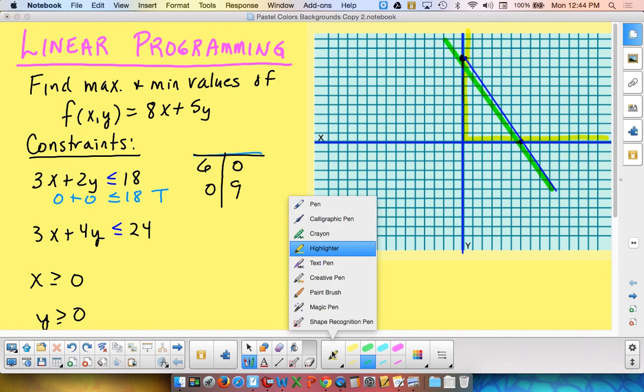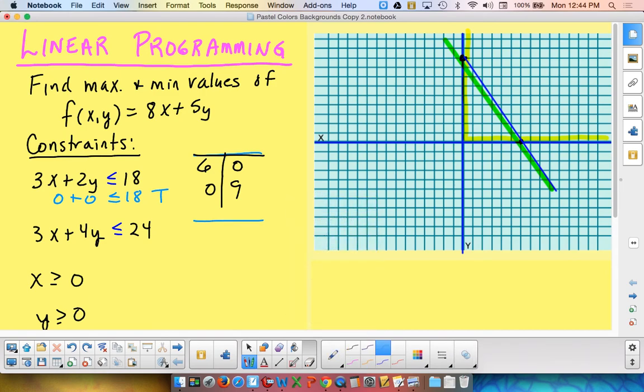If I go do this again and I do it for the second equation, I would have, once again, putting in my 0s. Covering up y, x would solve out to be 8. And, if I cover up x, y would solve out to be 6. So, I would be going for 8, 0 and 0, 6. And, once again, let's put a line across through there. And, I have a diagonal line here.